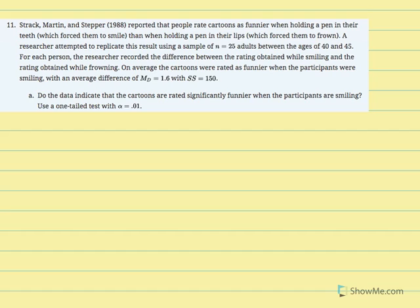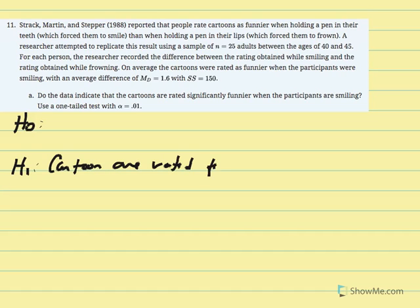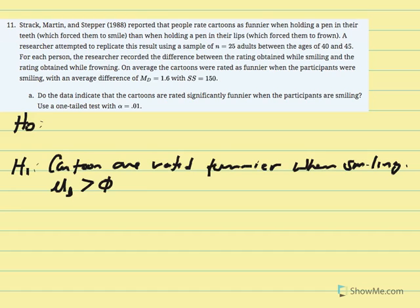We'll write our research and null hypotheses. For a one-tail test, it's easier to articulate the research hypothesis first. Research hypothesis: cartoons are rated funnier when smiling, so mu D is greater than zero. We record scores in the frowning condition first, then smiling, calculate difference scores, and get the average D.